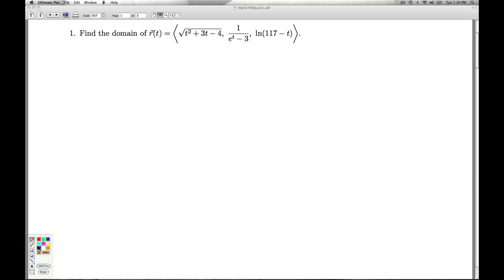Now we direct our attention to the second quantity, 1 over e to the t minus 3. So we have a denominator, and the only thing that could possibly go wrong for us is if the denominator were equal to 0. So remember the technique from algebra is we set the denominator equal to 0, find out who the bad guy is, and throw it out.